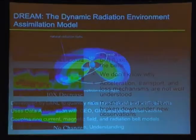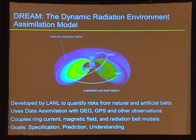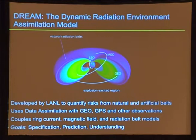In response to this problem, LANL developed the Dynamic Radiation Environment Assimilation Model (DREAM). It has a nice coupling between model observations, data assimilation, and statistics. It's a really big, interdisciplinary model with people from mathematics to physics to instrument managers to data processors. It was developed by LANL to quantify risks from natural and artificial radiation belts, using data assimilation with observations from GEO, GPS, and other satellites. It couples ring current, magnetic field, and radiation belt models, with the goal of specification, prediction, and understanding of radiation belts.